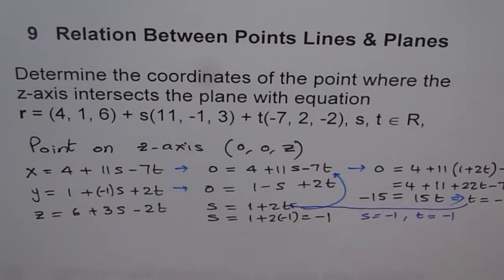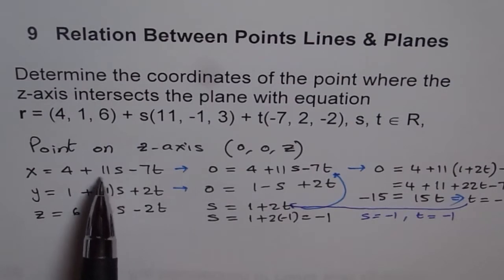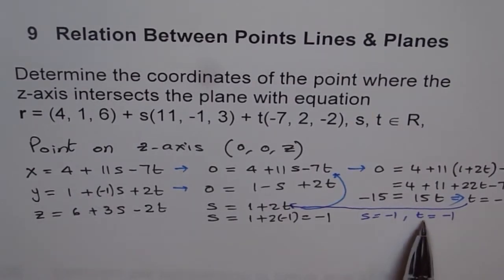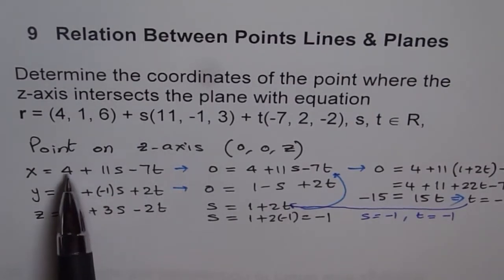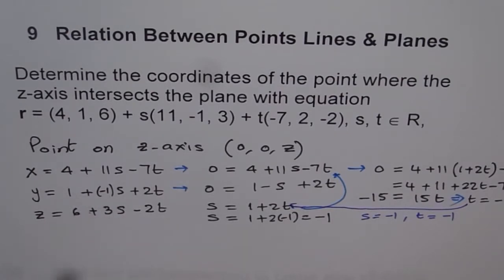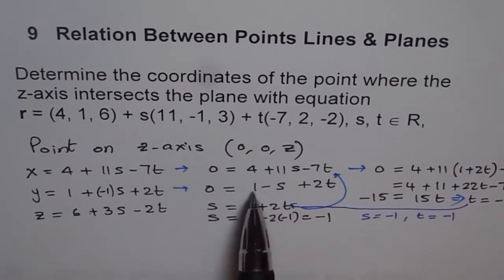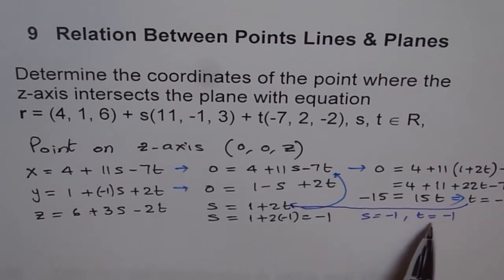Let's check this out now. If s is minus 1, this is minus 11 and if t is minus 1, this is 7 plus 4, 11. That makes it 0, perfect. And here, if I plug it in here, minus 1 will make it plus 1 which is 2, and t minus 1 make it minus 2, perfect.